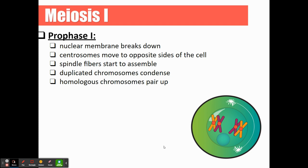Then we're going to start PMAT — prophase, metaphase, anaphase, telophase. We're going to refer to these as prophase one, metaphase one, anaphase one, telophase one, and then prophase two, metaphase two, anaphase two, and so on, to distinguish between the steps of meiosis one and meiosis two.